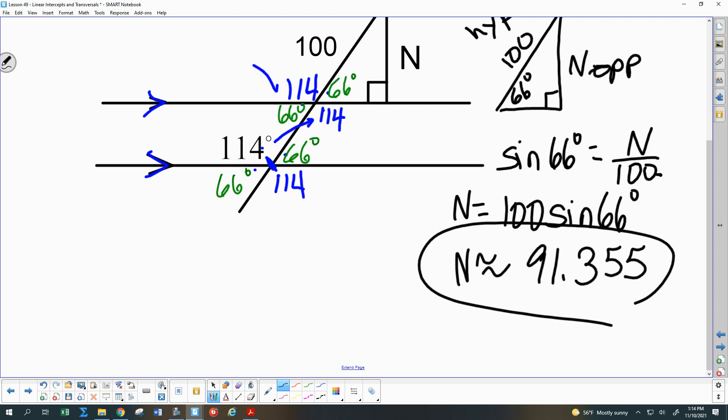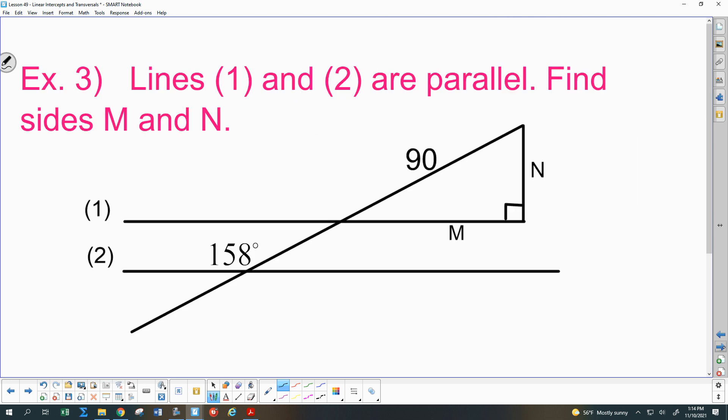Okay, let's do one more of these since it's new. Okay, they tell us that the lines are parallel. So all of my obtuse angles are 158. Again, combination, vertical angles, corresponding angles, alternate interior angles, depending on which direction you go first.